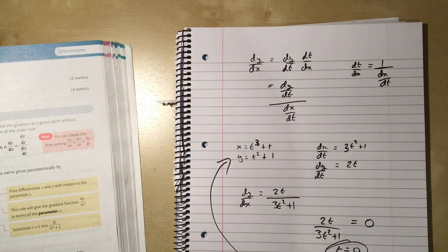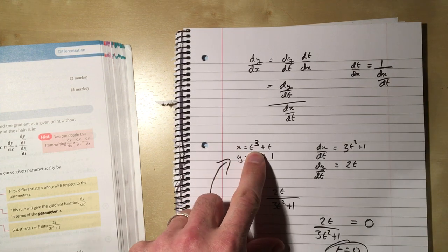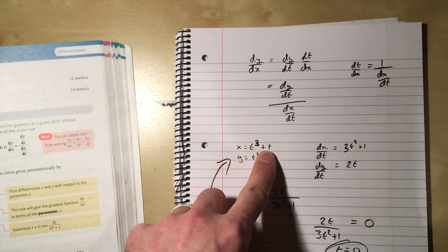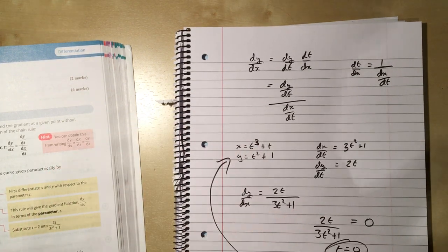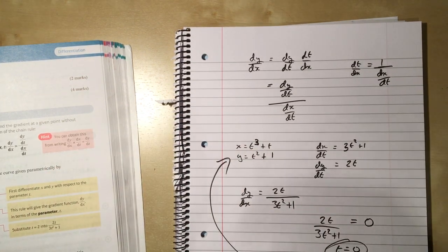If you want to find the gradient at a particular x value, take the x value and substitute it in, and find the t value that goes with it. Once you've found the t value, you can substitute that into the gradient function and find out what the derivative is there, and that is the gradient of the function.